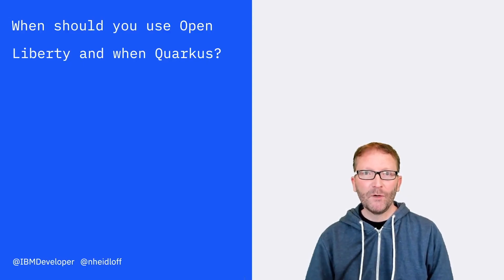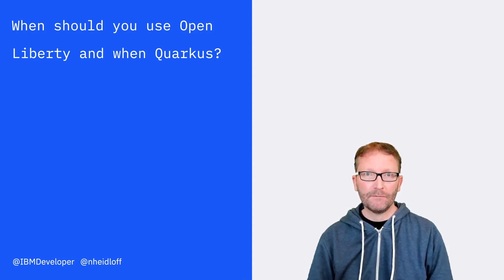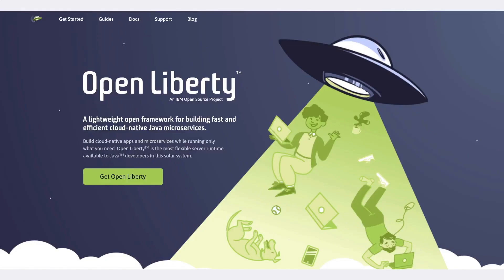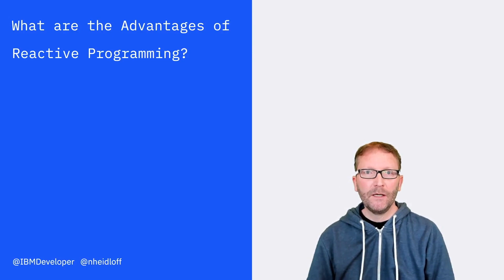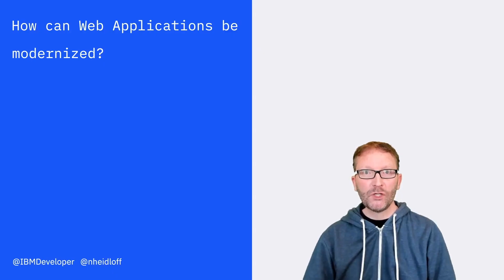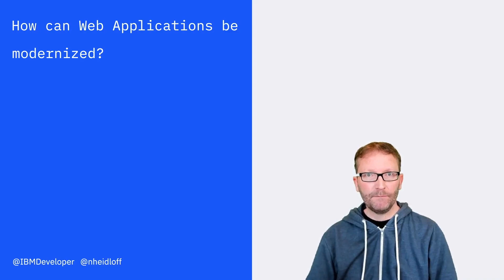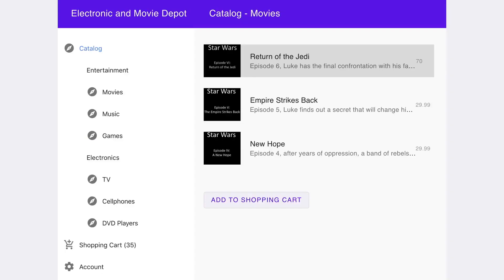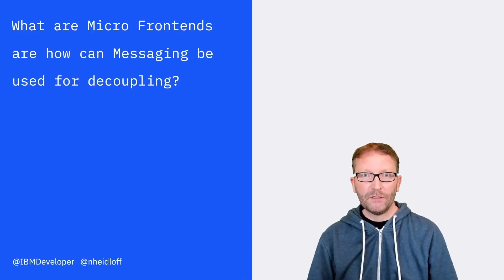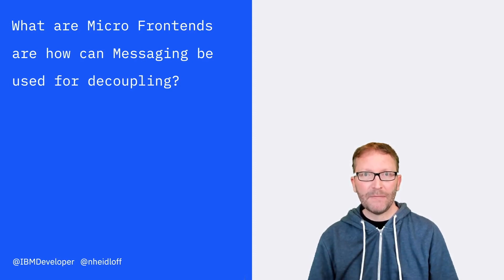Question number seven: when should you use Open Liberty and when should you use Quarkus? Question number eight: what are the advantages of reactive programming? Question number nine: how can web applications be modernized? And the last question, number ten: what are micro frontends and how can messaging be used for decoupling?